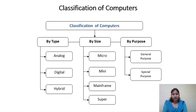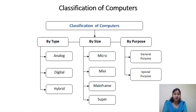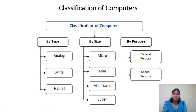Next we have the classification of computers on the basis of type, size, and purpose. On the basis of type of signal, we have three kinds of computers: analog computer, digital computer, and hybrid computer, which combines both analog and digital signals.